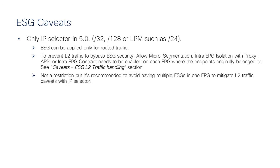We are in the first release of ACI for ESG, so the feature set is not yet complete. There is only an IP selector in this release — you can configure slash 32s or slash 128s for longest prefix match, or slash 24s, so it's a flexible IP selector, but you don't yet have the MAC selector, the VM tag selector, and so on.